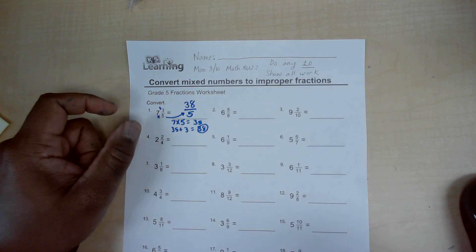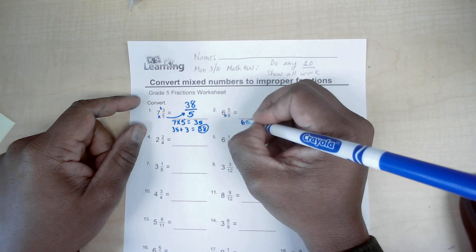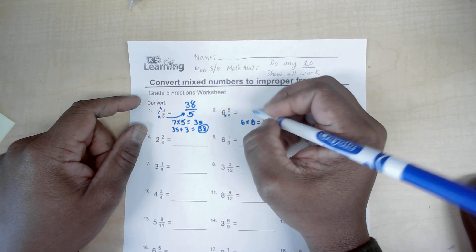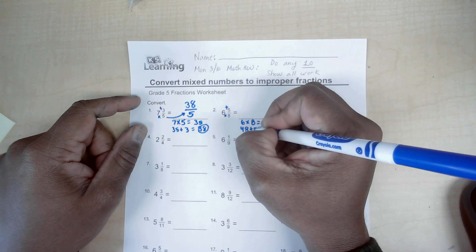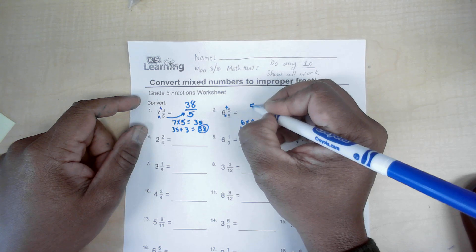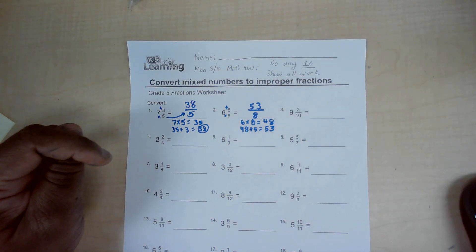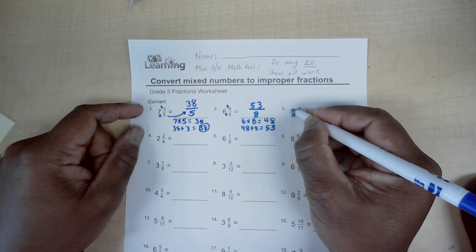Same thing here. You have 6 times 8, so that's 48, and then you take that 48 and add the 5, and you get 53. So it's 53 over 8. So the strategy is you multiply the whole number and the denominator.